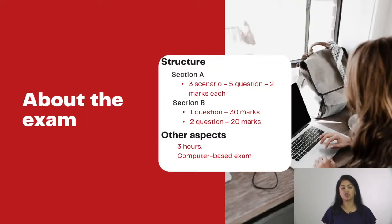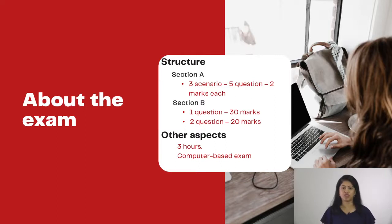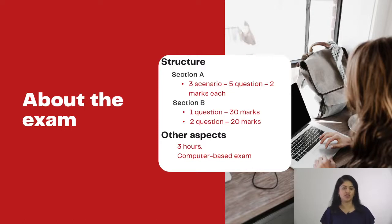First and foremost, we're going to be looking at your exam structure. The AA paper is a unique paper at a fundamental level which has got only two sections: Section A and Section B. Section A has got three scenarios, each of the scenarios has got five questions, and each question is worth two marks.